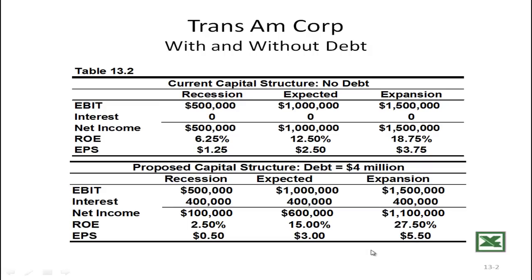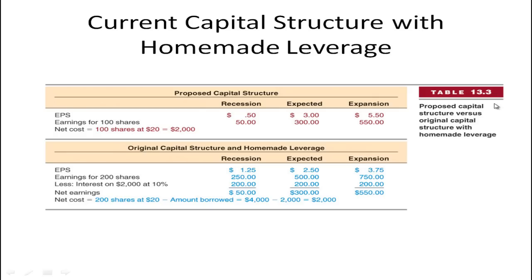The big question is: does this actually matter? Modigliani and Miller worked out that it doesn't. Here's the example they give using the proposed capital structure with $4 million in debt and $4 million in equity. EPS figures are $0.50, $3, and $5.50. Assuming you hold 100 shares of stock, your earnings are $50, $300, and $550 — just multiply 100 by the EPS. Net cost is 100 shares at $20, which is $2,000.